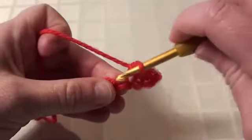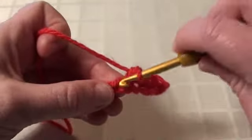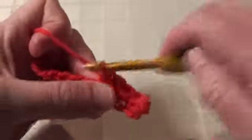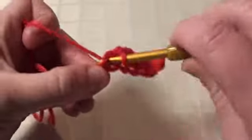Some people do call the crochet foundation row 'row one,' so that may be confusing for some.